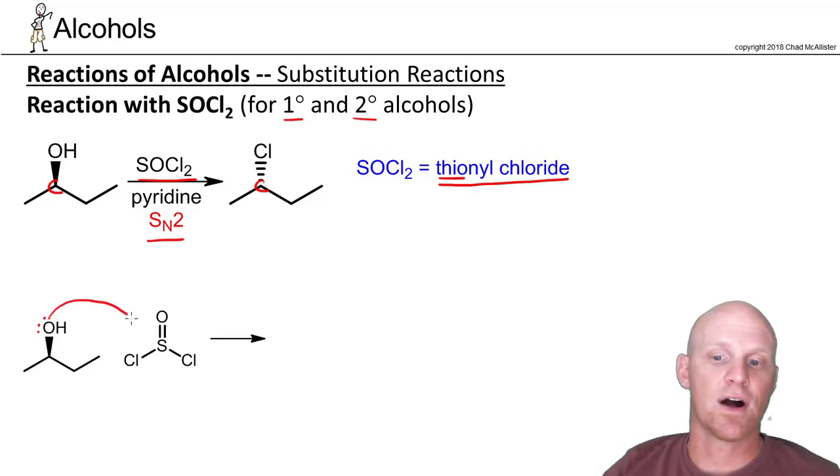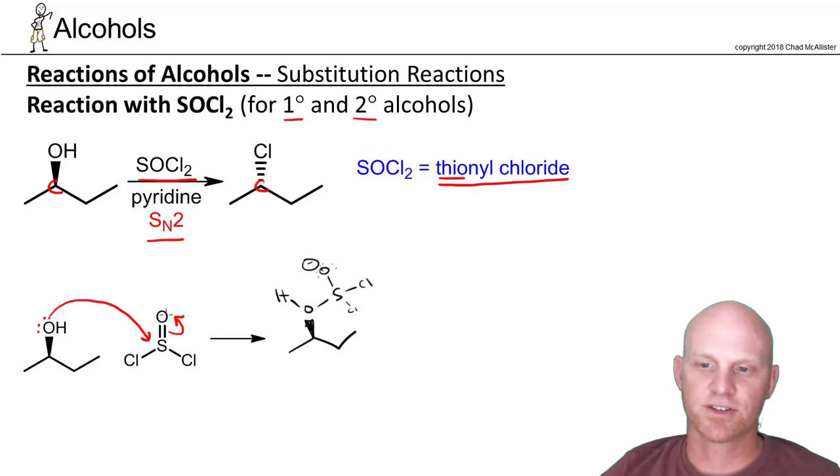So first step is your alcohol is going to come and do nucleophilic attack on the sulfur atom. So it turns out those electrons, the pi electrons that went up to the oxygen, they actually come right back down and kick off one of the chlorines. You might be like, why doesn't this just happen in two steps? And you're going to have to take up that beef with nature. That's just the way it works.